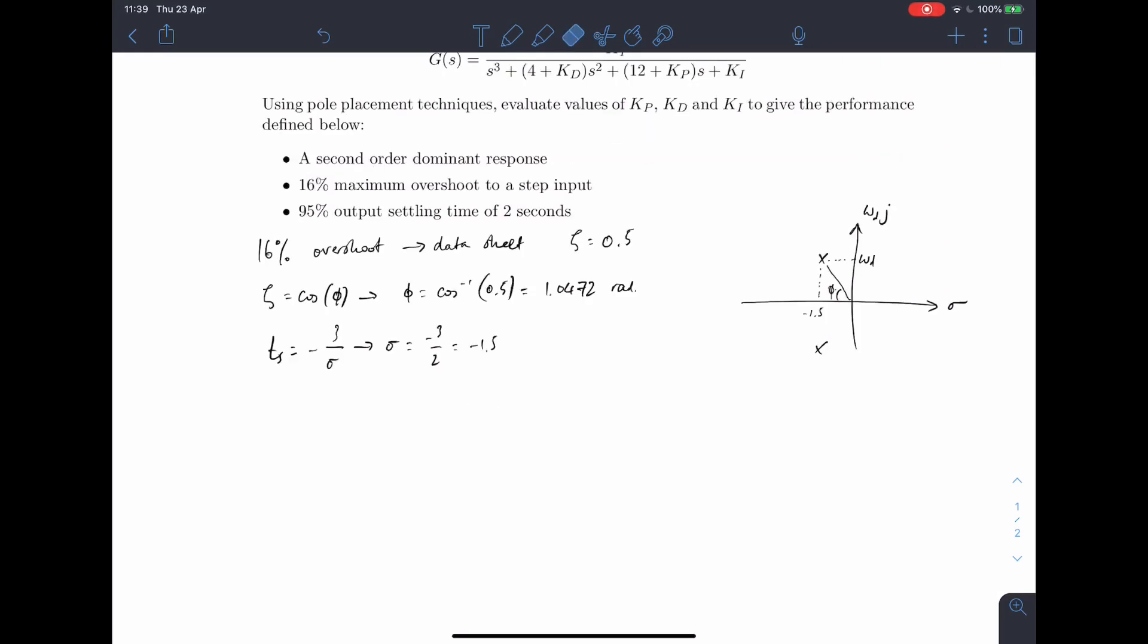Now that we have a value for sigma, we can work out what the omega d is, the damped natural frequency, which will give us our pole placements. And so we know that this tangent of phi, opposite over adjacent, we know that's going to be omega d divided by minus sigma. And so we know that that's going to be omega d is going to be minus sigma times by tangent of phi.